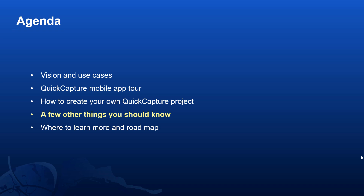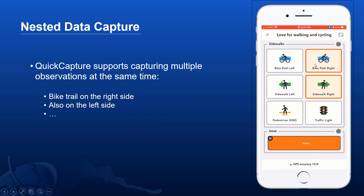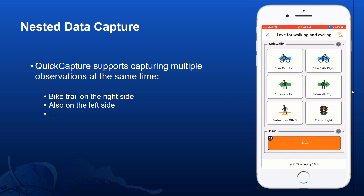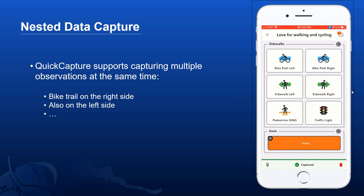There are a few unique features to be aware of. Nested data capture is unique to ArcGIS Quick Capture — polyline or polygon buttons can all be active at once, capturing multiple records simultaneously. For example, capturing a bike path on the right, a sidewalk on the right, and a sidewalk on the left — all at once. While these polyline buttons are active, you can still push a point button like 'traffic light' to capture a point. That's extremely useful when you are on the move.